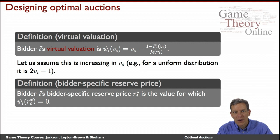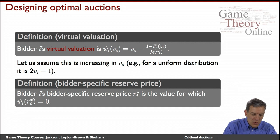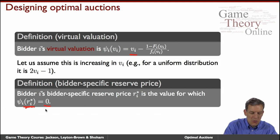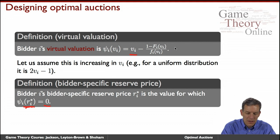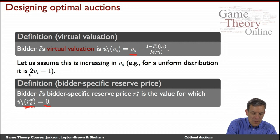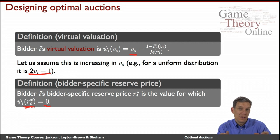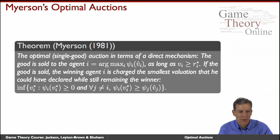We set the reserve price to be the value of vᵢ at which the virtual valuation equals exactly zero. That defines the bidder-specific reserve price. Plugging in the uniform distribution — virtual valuation 2vᵢ − 1 — the value at which this equals zero is vᵢ = 1/2. So for uniform [0, 1], the individual reserve price is one half, consistent with what we found earlier.